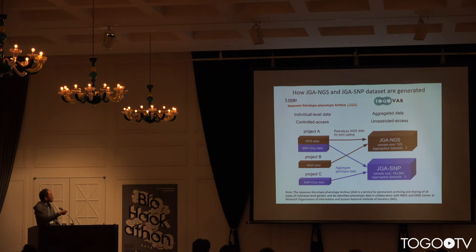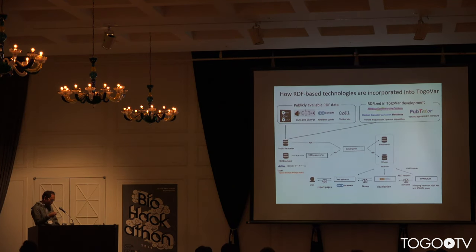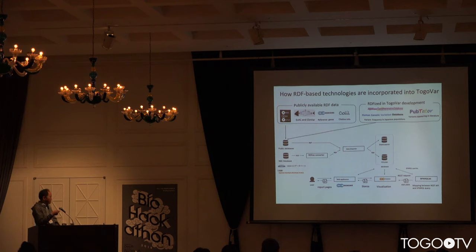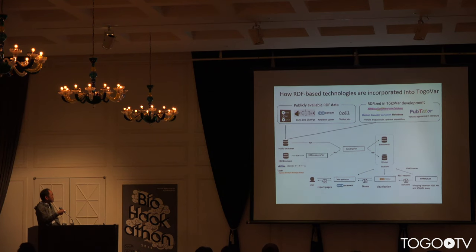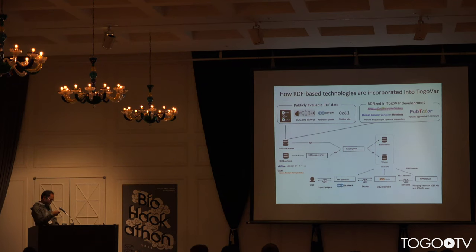This is the data flowchart of Togooba. Togooba imports a lot of publicly available RDF datasets without additional processing. The datasets include those RDFs from the RDF project led by Kamata-san, so we are able to concentrate on the RDFs for Japanese variant data. For data searching and visualization, middleware developed by DBCLS is used. Sparklist is used to transform REST queries into SPARQL, and Togo standard is for data visualization. Thanks to these technological assets, we are able to build the Togooba system in a short time period.